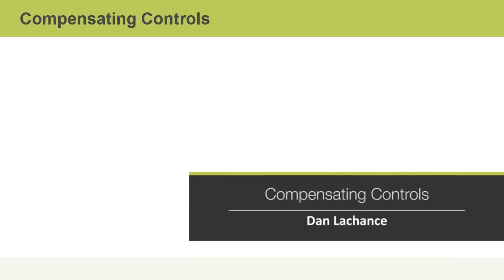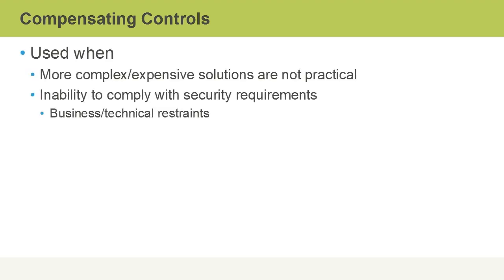In this video, I'll talk about compensating controls. There are many different categories of controls that can be used to secure business processes or assets. With compensating controls, these are used when more complex or expensive solutions just aren't practical.